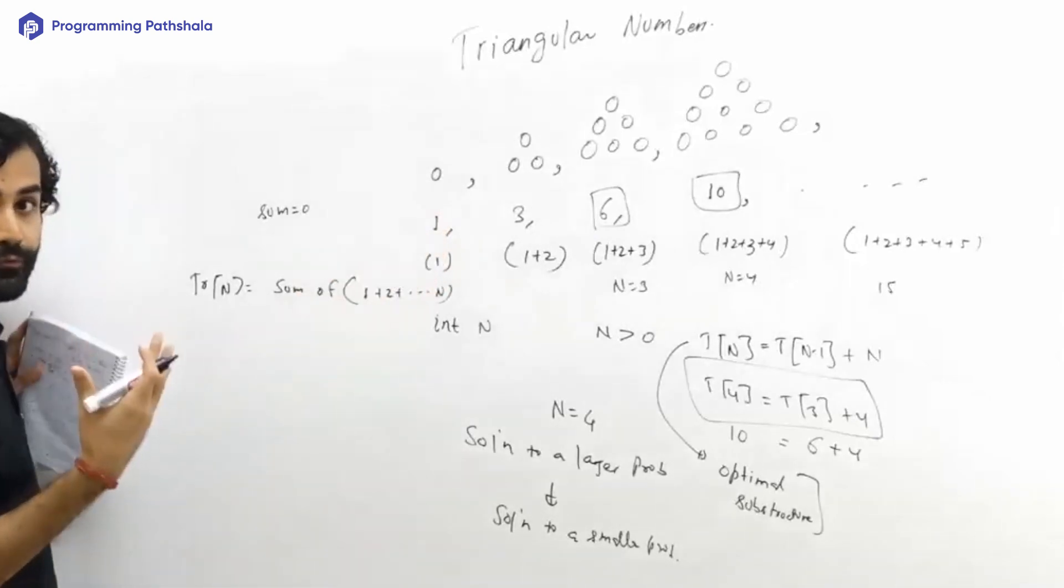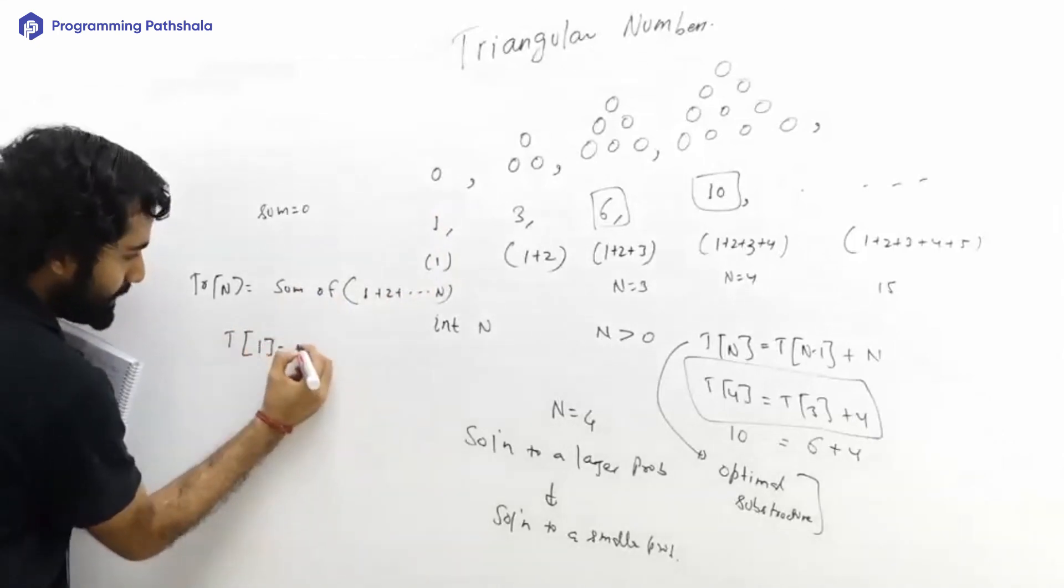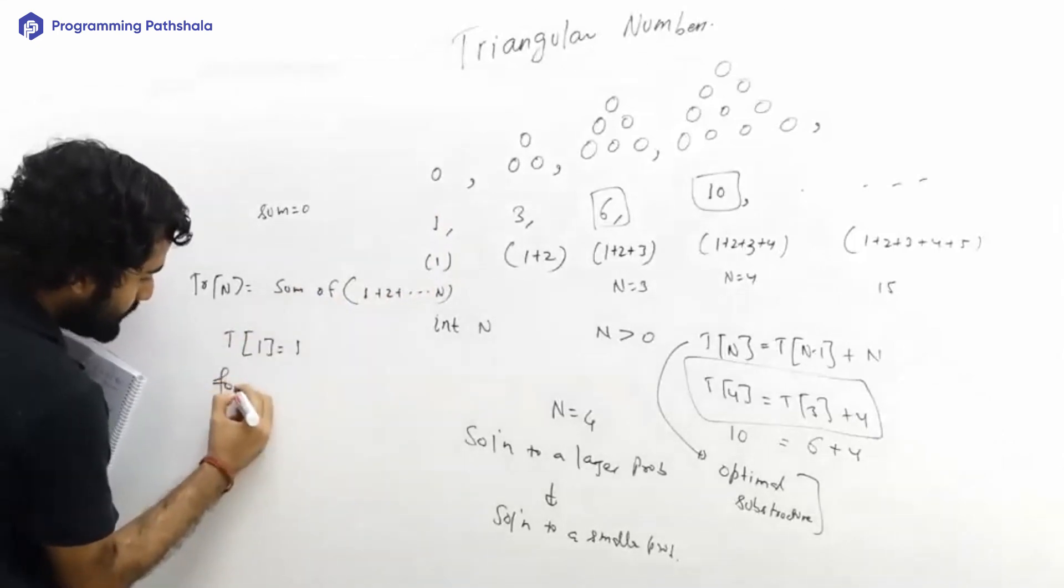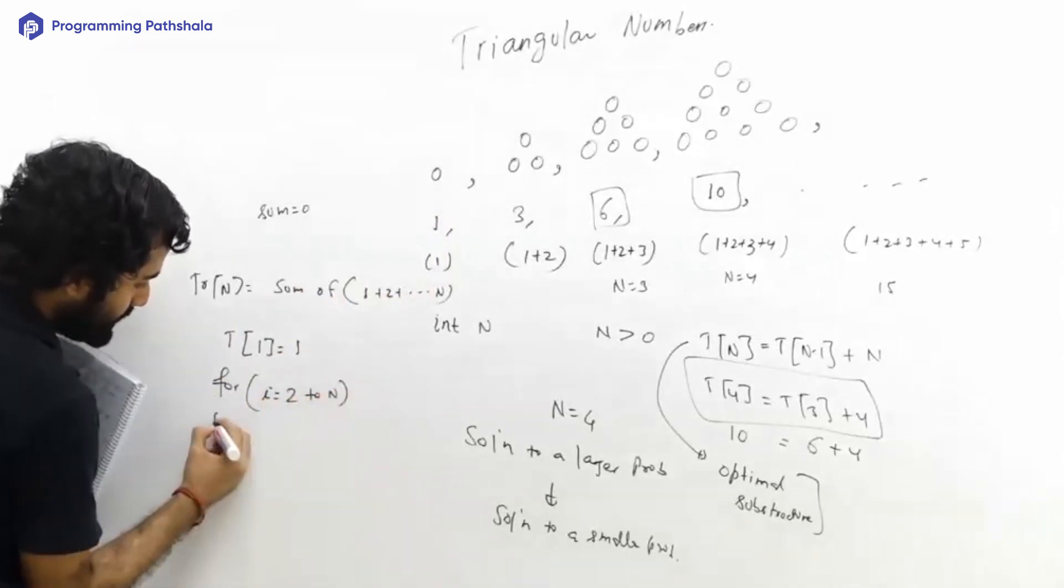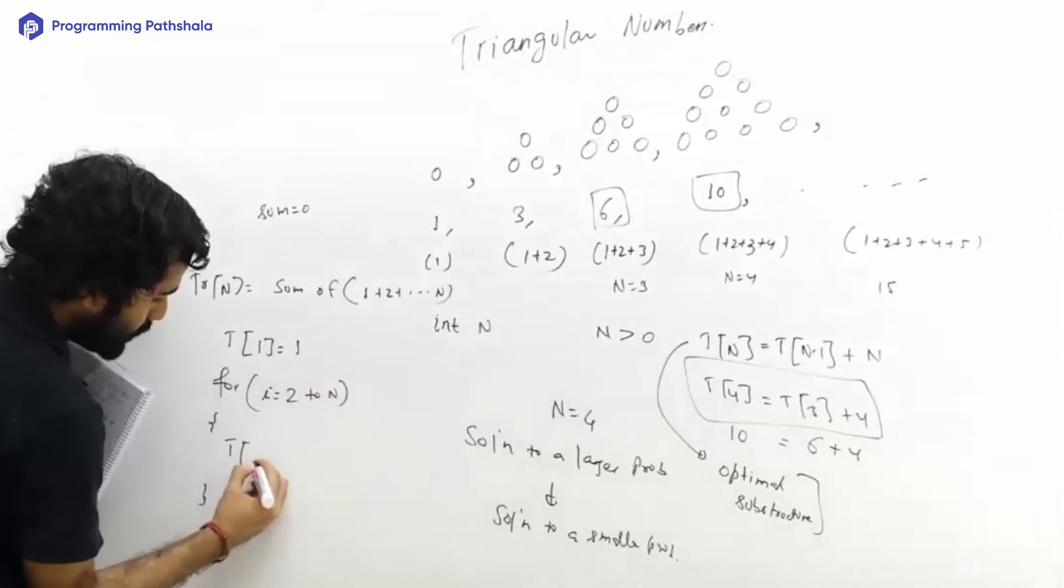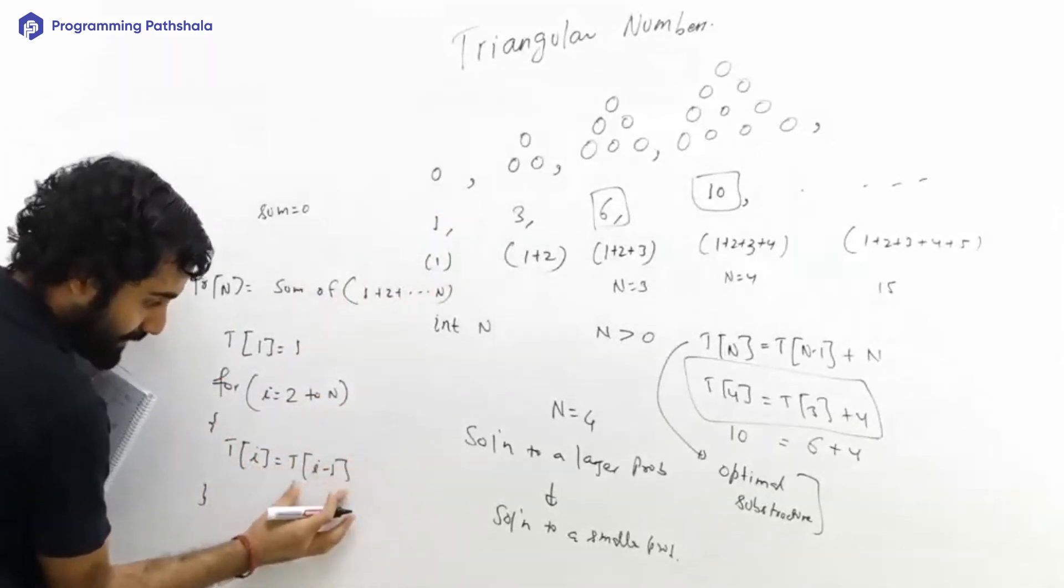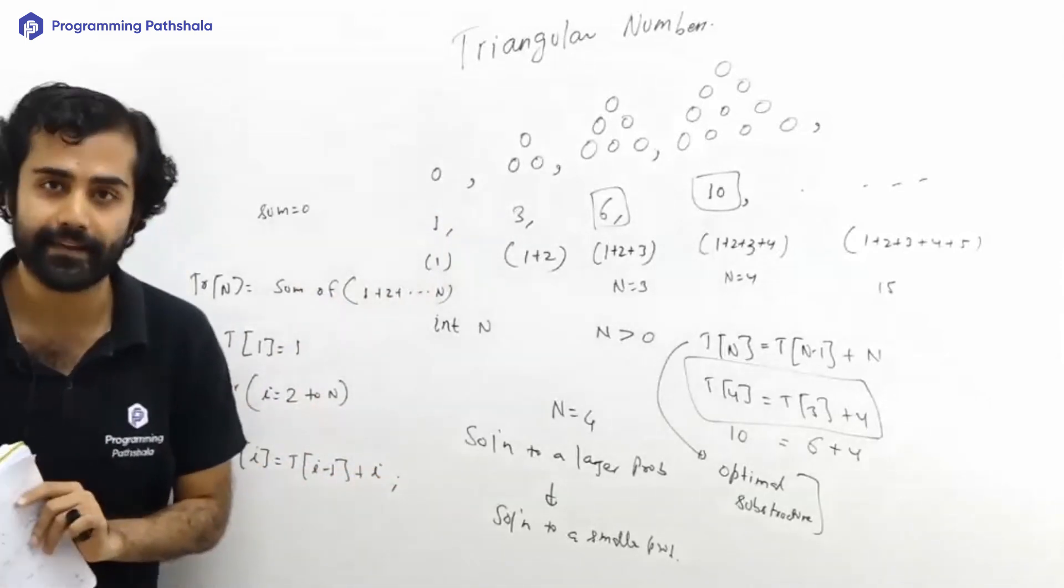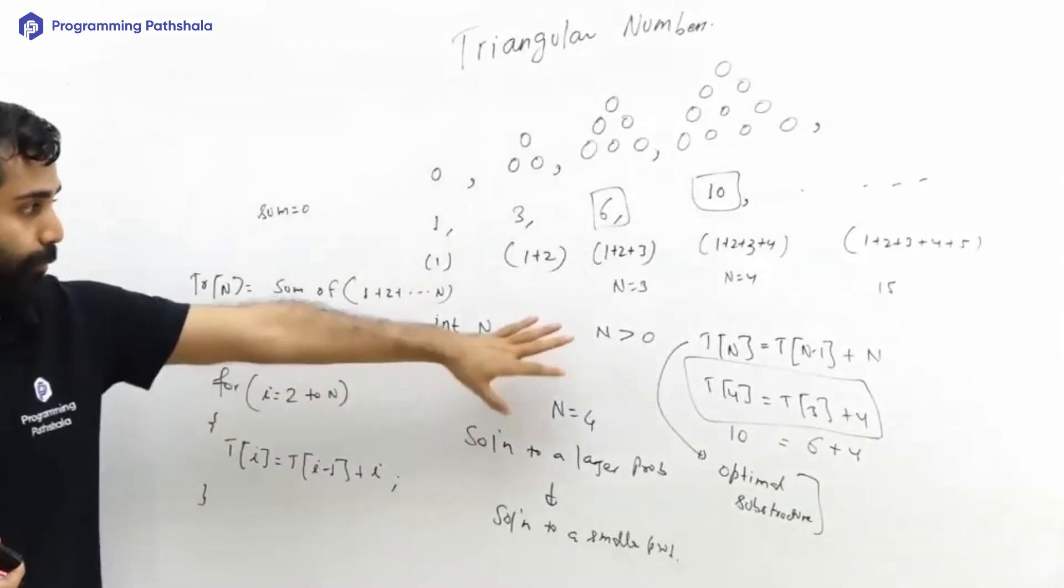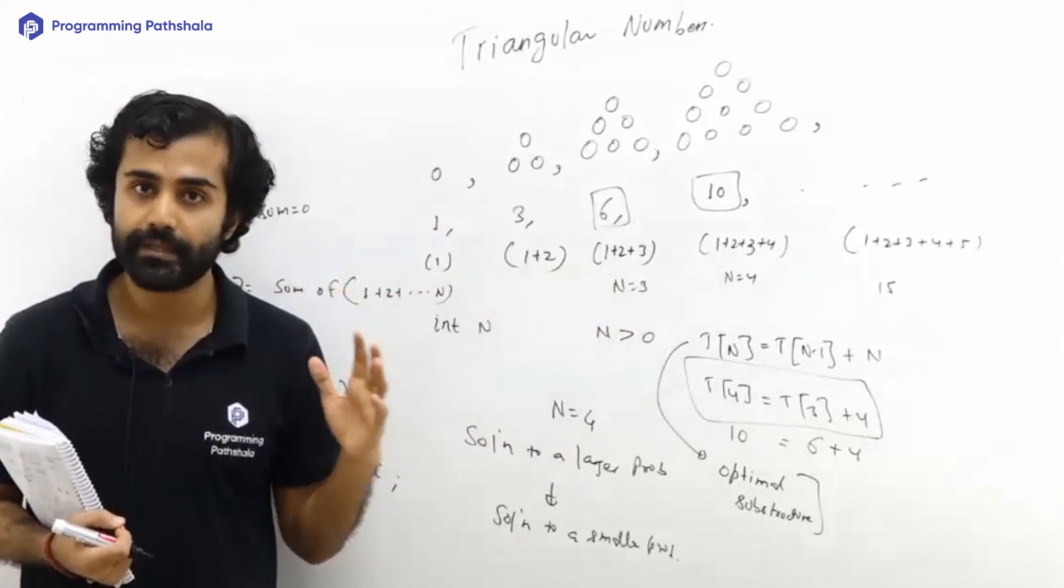Now that we understand this thing, I can say that I can have an array of size n if I am supposed to find n triangular numbers. The first triangular number is one, and then I would run my loop from two to n and I would say that the ith triangular number should be the i minus one triangular number plus i. This is a simple piece of logic that I can write.